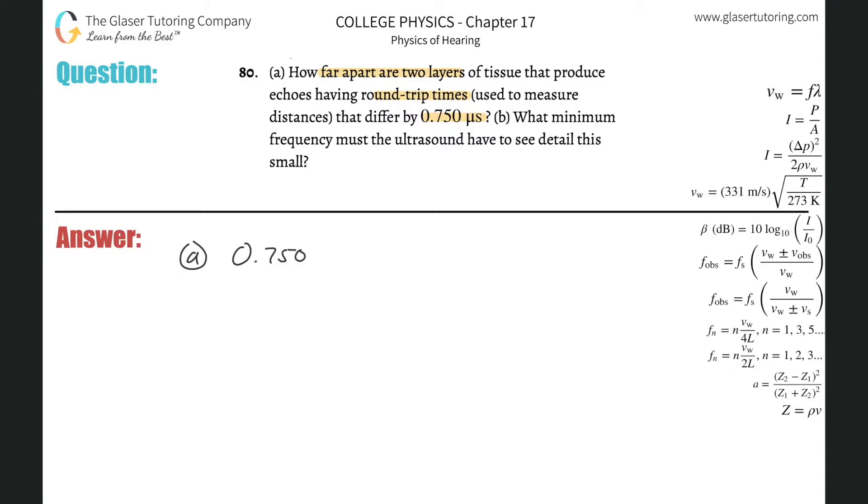If it's a round-trip time, what's the time it takes to go one way? You just divide that by two. So 0.75 over 2 is 0.375 microseconds. But we don't need microseconds, we need seconds, so let's multiply that by 10 to the minus 6 seconds.